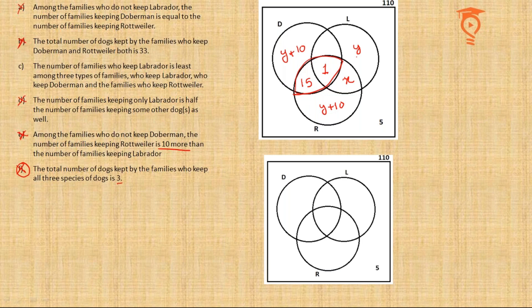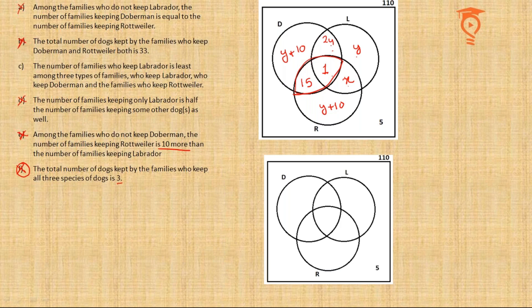Point D: the number of families keeping only Labrador (which is y) is half the number keeping Labrador plus something else. The three other Labrador-related positions already have 1 and x entered; their sum should equal 2y, so I write 2y−x−1 in the remaining position, making the sum of those three places equal to 2y.